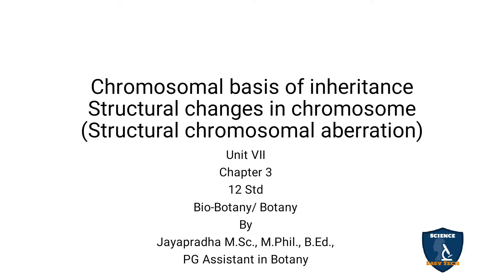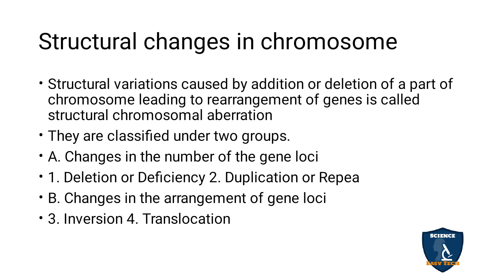Today we are going to see about the structural chromosomal aberrations in the chromosomal basis of inheritance. This is the part of changes in the chromosome number that we have already seen in the previous class. Structural changes in the chromosome — when changes occur in the structure of the chromosome, it is called structural chromosomal aberration. It is of two types.